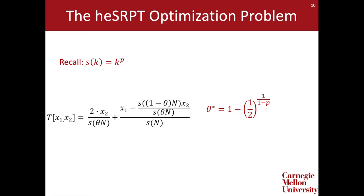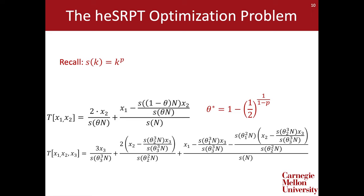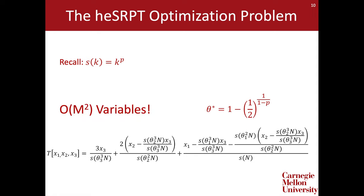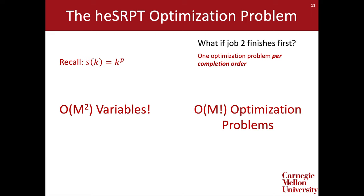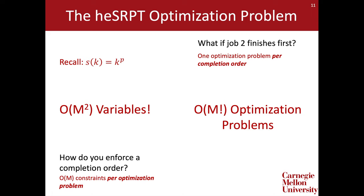Unfortunately, the expression for total flow time becomes very complex with even just a third job. In general, with m jobs in the system, we'll have to solve an optimization problem with m squared variables. To make matters worse, this expression explicitly encodes a particular completion order of the jobs — if we were to consider a different completion order, we would have to write down a completely different optimization problem. If we don't know anything about the optimal completion order, we might have to solve O of m factorial optimization problems, each with O of m constraints.